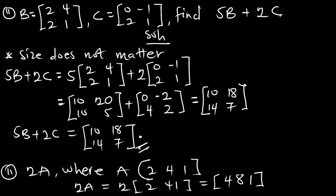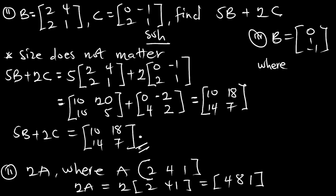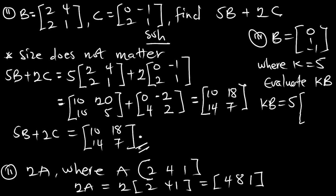The same thing, if we have a column matrix B equal to [0, 1, -1], where our scalar K is 5, and we have to evaluate KB, then our KB is going to be 5 times [0, 1, -1], which gives us [0, 5, -5]. With the multiplication by a scalar, the size does not matter — no matter the size, you can perform your multiplication.